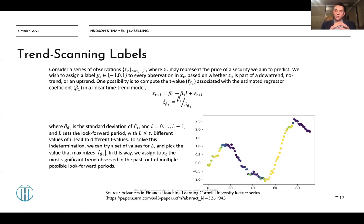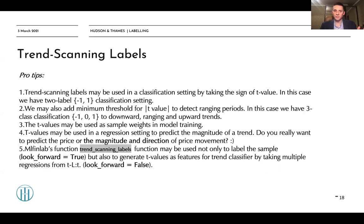Here are several pro tips. First, trend-scanning labels may be used in a classification setting by taking the sign of the t-value. In this case, we have a two-label classification. When we have found the regression which yields the maximum absolute t-value, the value of our label (either minus one or one) is simply the sign of this t-value.